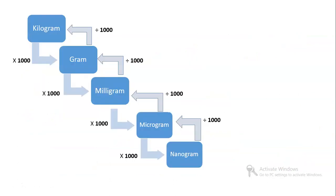When you go down the steps, the highest unit is kilogram, just below that is gram, then milligram, then microgram, and nanogram. As you step down you multiply by 1000. Just remember the order: kilogram, gram, milligram, microgram, nanogram.